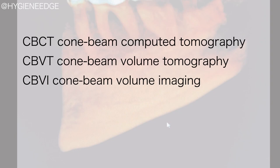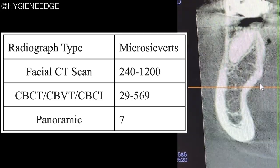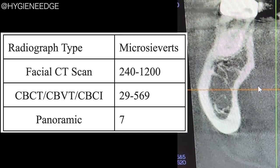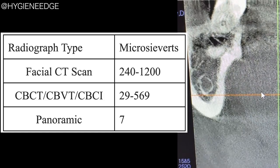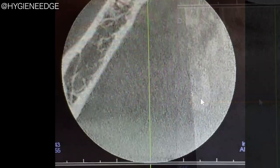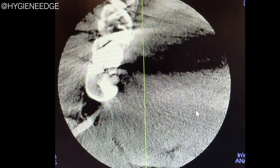It has a lot of different names depending on the source — CBCT, CBVT, CBVI — you can call it whichever one you like. As you can see in this table, it does produce more microsieverts of radiation than a panoramic, but a lot less than an actual facial CT scan.